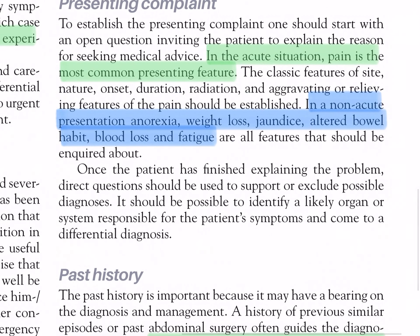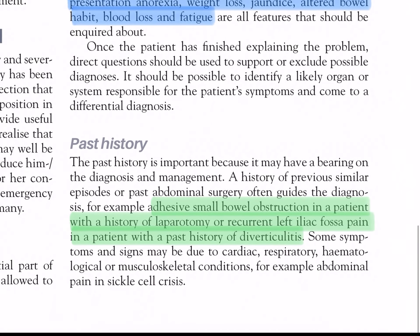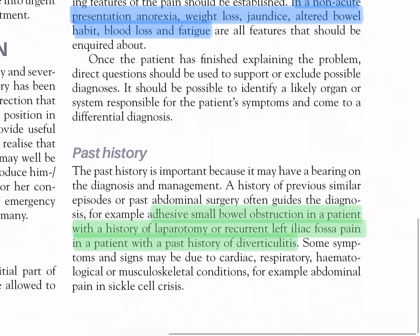Once the patient has finished explaining the problem, direct questions should be used to support or exclude possible diagnoses. It should be possible to identify a likely organ or system responsible for the patient's symptoms and arrive at a differential diagnosis. Past history is important because it may have a bearing on the diagnosis and management. A history of previous similar episodes or past abdominal surgery often guides the diagnosis — for example, adhesive small bowel obstruction in a patient with a history of laparotomy, or recurrent left iliac fossa pain in a patient with a past history of diverticulitis.